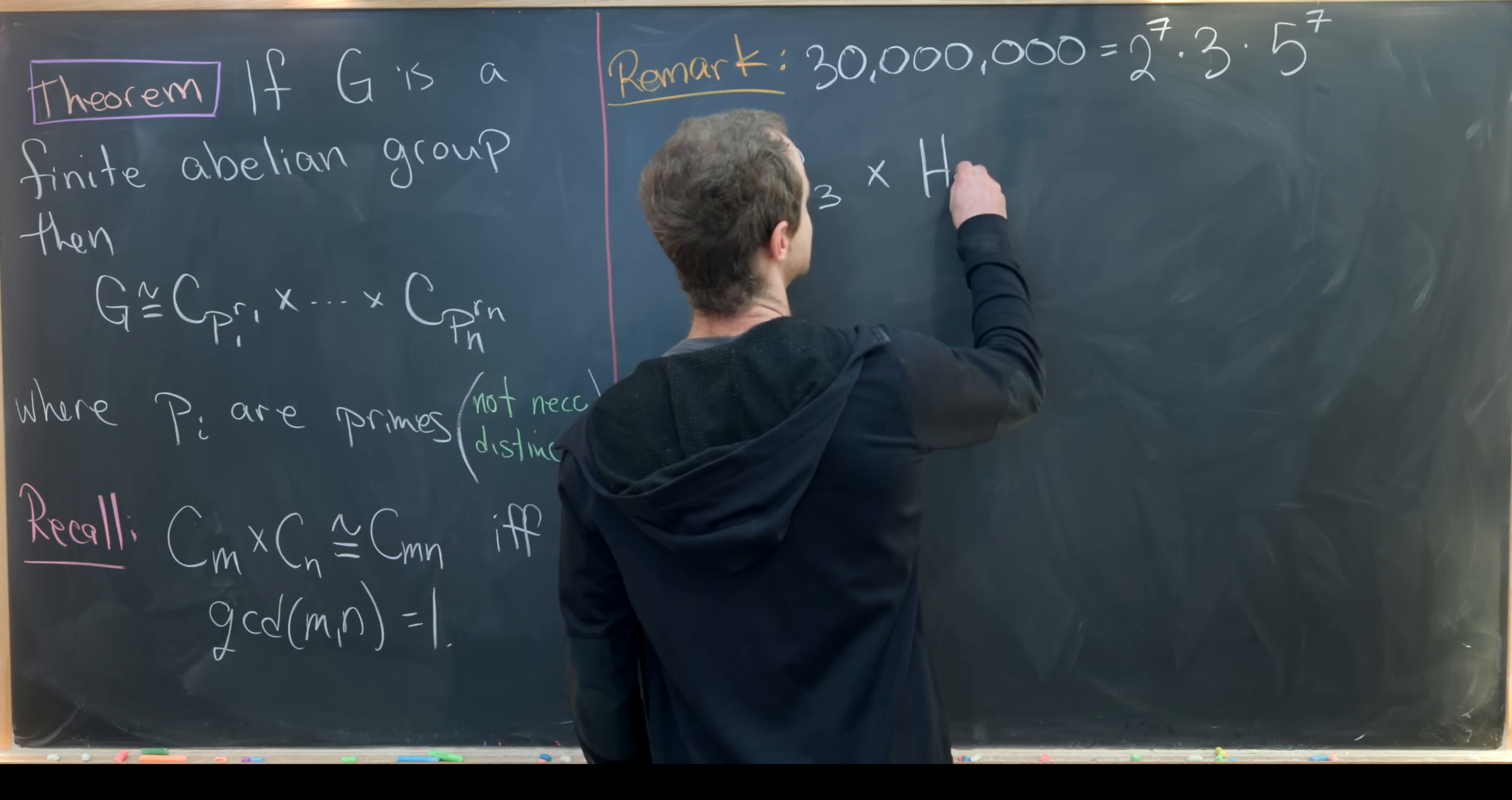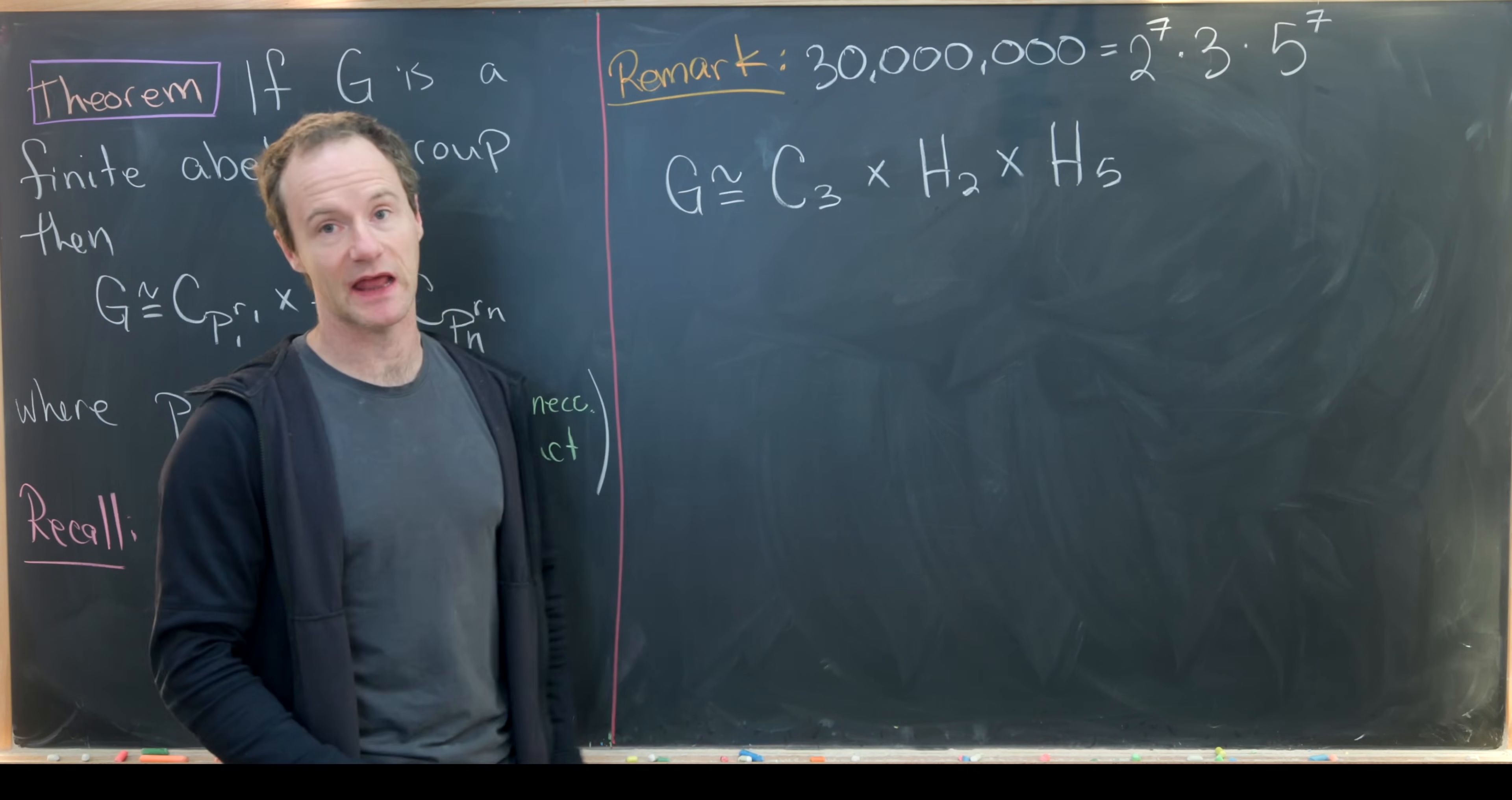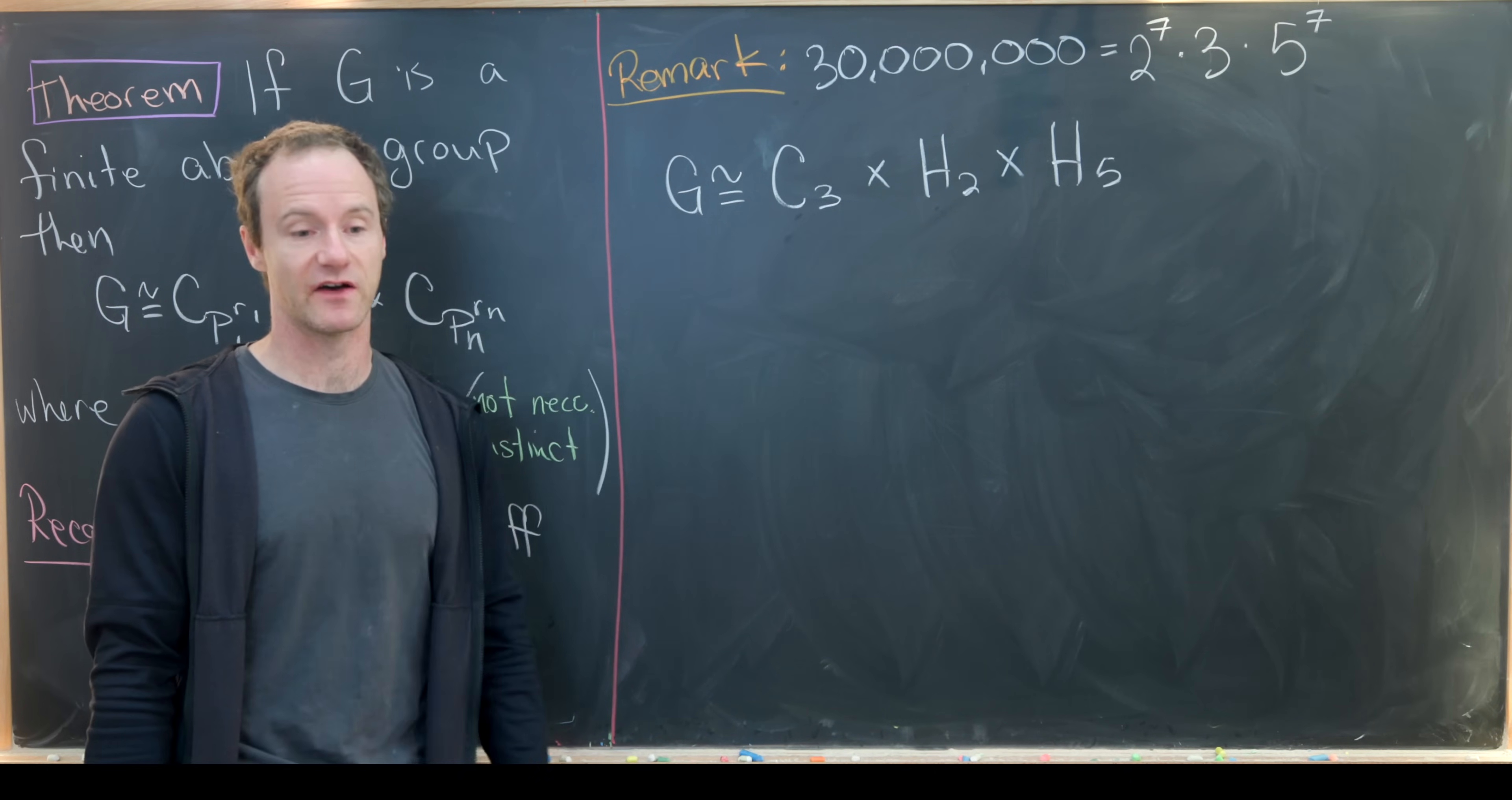H2 is built so it has order 2 to the 7th and H5 is built so it has order 5 to the 7th. But there are going to be lots of different possibilities for H2 and H5. Notice the 3 factors out naturally and there's not anything you can do with that. This you can think of as the symmetries of an equilateral triangle, the rotational symmetries just like we have been.